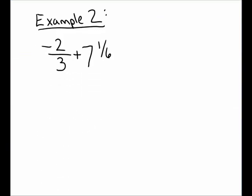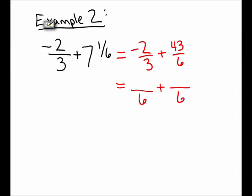In the next example, I'm going to add the fraction negative 2/3 to 7 and 1/6. I'm going to rewrite 7 and 1/6 as an improper fraction — that's 43 over 6. Next, I need to get a common denominator for the fraction negative 2/3 and the fraction 43/6. I ask myself: what number do both 3 and 6 multiply into? They have a common multiple of 6. So I will rewrite negative 2/3 with a denominator of 6, and I notice the second fraction, 43/6, doesn't even need to be rewritten.